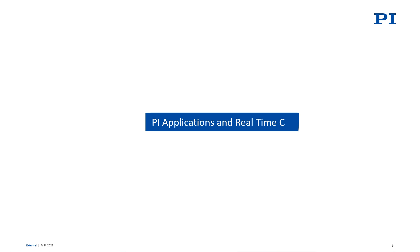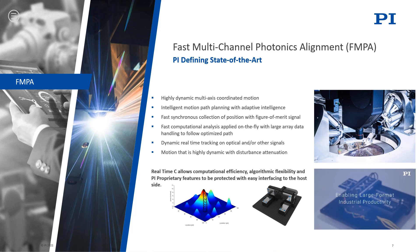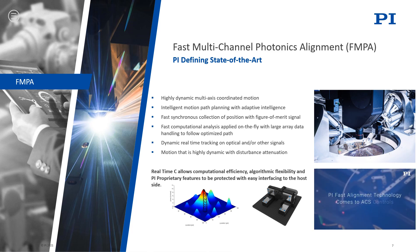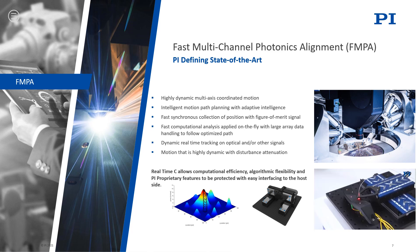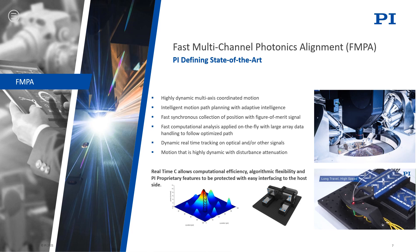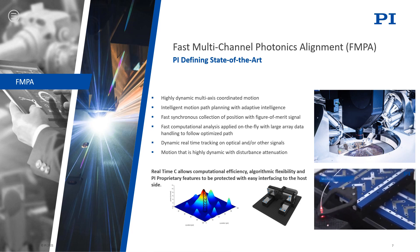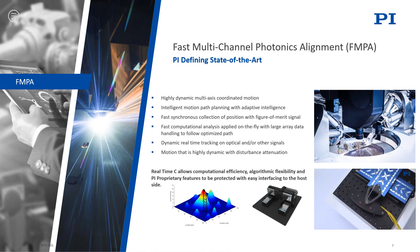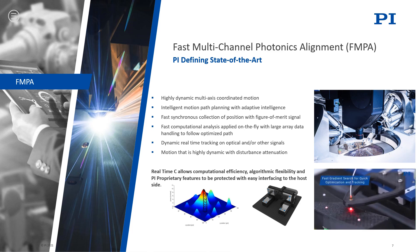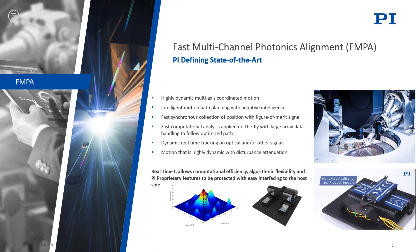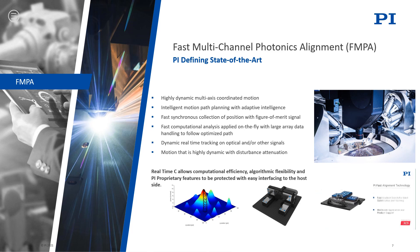Here we're going to look at a few specific PI applications and our use of real-time C in those applications and what advantages it can bring with ACS. The first application is fast multi-channel photonics alignment — FMPA. In these applications and the end markets they serve, PI has been defining the state of the art. We've developed a number of novel motion system technologies, algorithms, and general capability that is, for lack of a better term, world-leading state of the art.